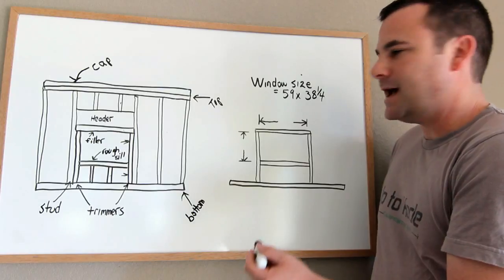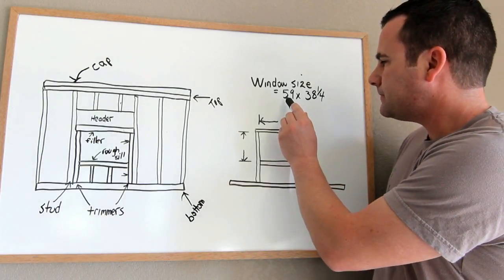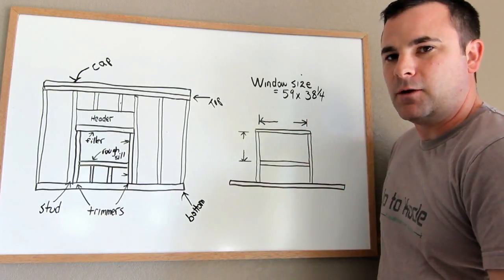So just for an example, let's say you have a window that's 59 by 38 and a quarter.